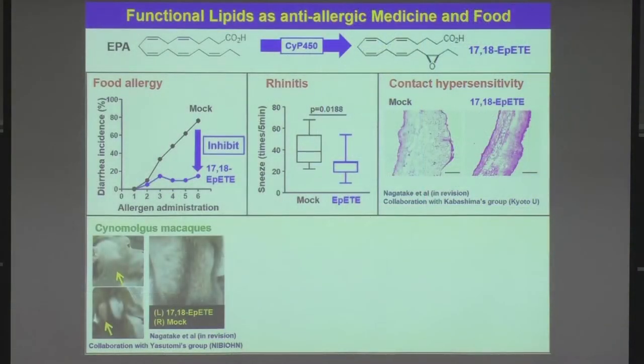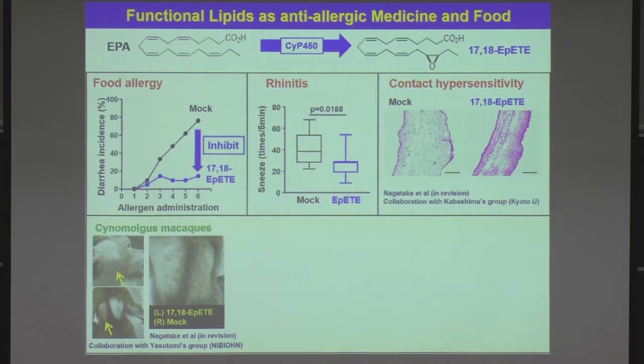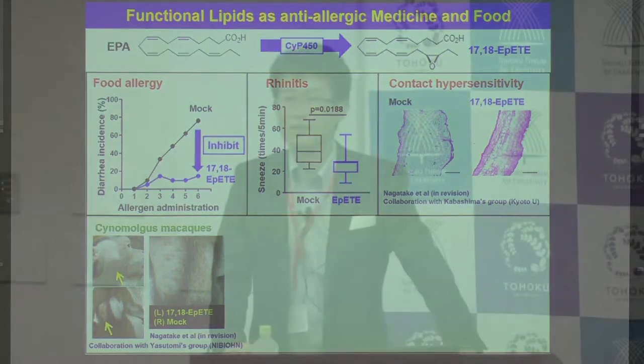We are now trying to examine the effect of EPETEs in non-human primate systems. Our institute has a non-human primate center, and using crab-eating monkeys, we found that this lipid metabolite EPETE very efficiently inhibits and treats skin inflammations in non-human primates. We also identified the receptor for EPETE — not only in mouse, but this lipid is nicely recognized by human receptors, suggesting it is very good for controlling human inflammatory and allergic diseases.